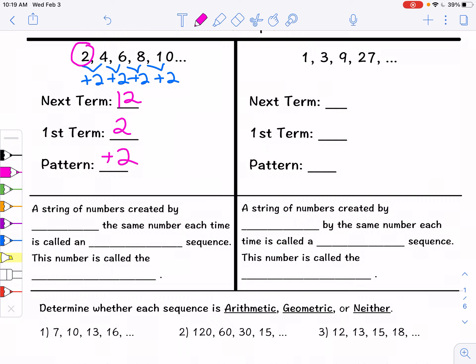If I look over at the other one, 1, 3, 9, 27, to go from 1 to 3 I multiply by 3. I do this every time. So 27 times 3 for our next term is going to give us 81. The first term is 1 and then my pattern is times 3 every time.